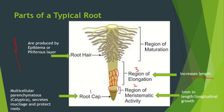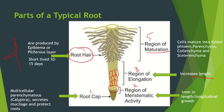The next region is the region of root hair. Root hairs are produced from the epiblema or piliferous layer — the outermost epidermal layer. These unicellular, fibrous, hair-like, cylindrical structures are called root hairs, and they increase the surface area for absorption. The fifth and last region is the region of maturation, where cells mature and form xylem, phloem, parenchyma, colenchyma, and sclerenchyma — there is distribution of labor forming different types of permanent tissue. Root hairs are short-lived, surviving only 10 to 15 days, after which new root hairs are produced.